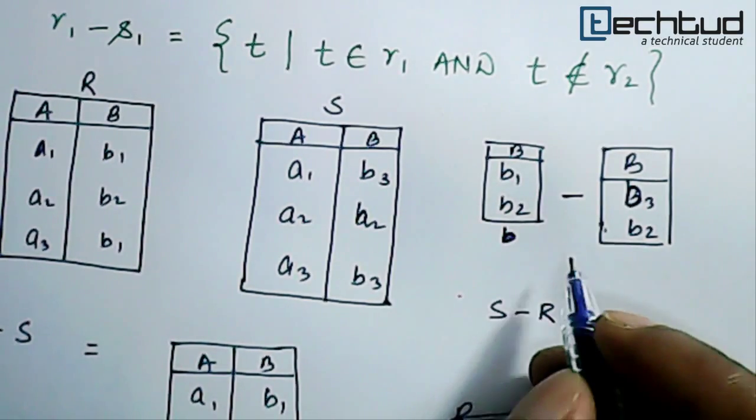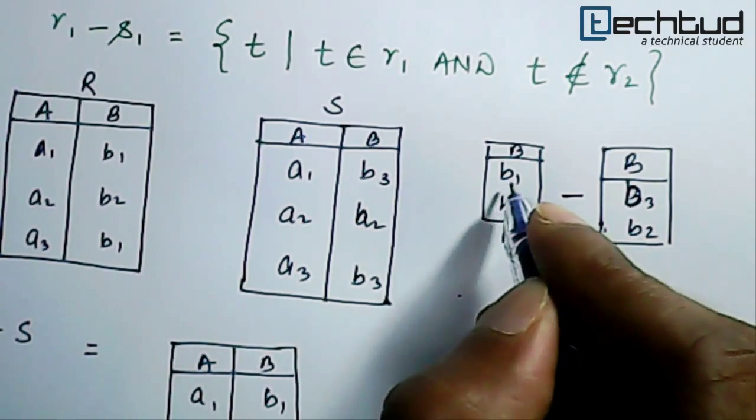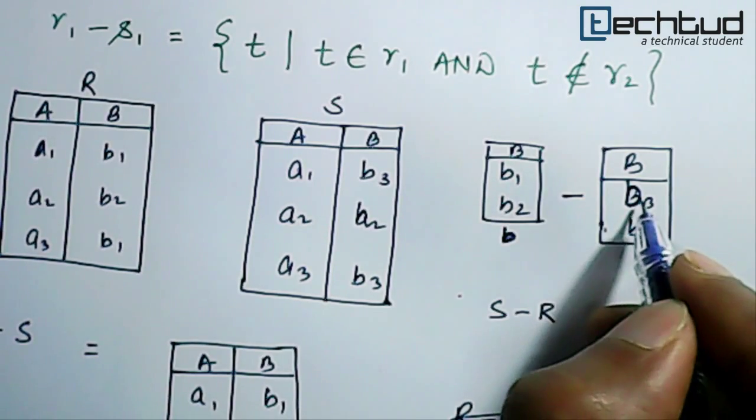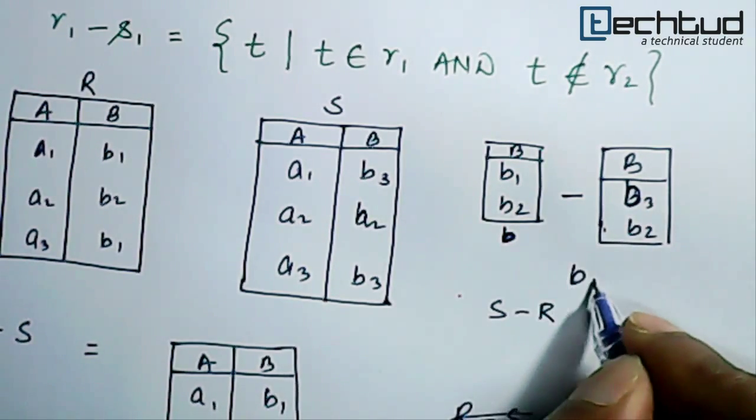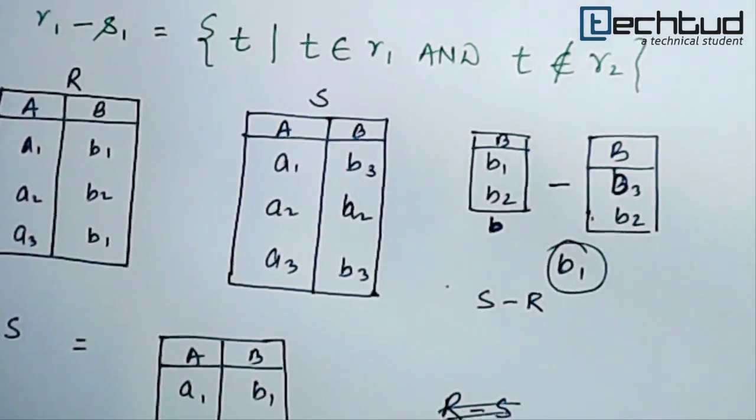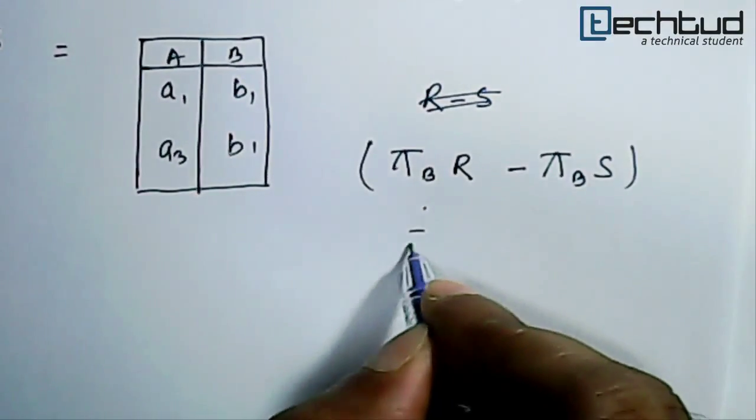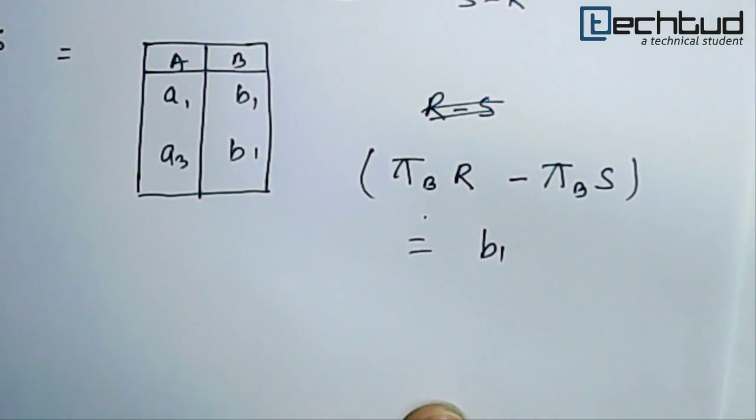Now if we subtract this, we will have the row or the attribute which is present here but not present here. That is equal to B1. This will be our answer for this particular query, that is B1.